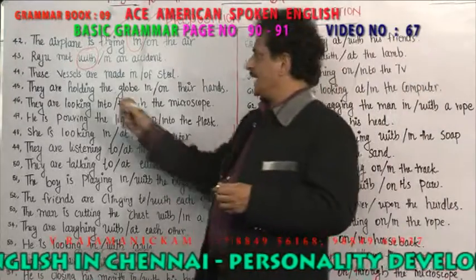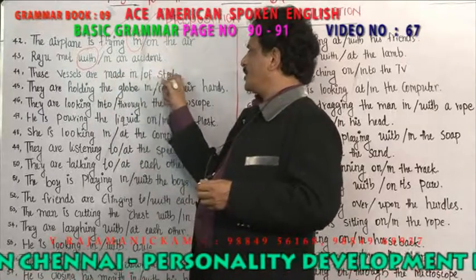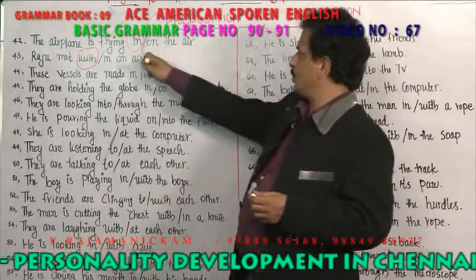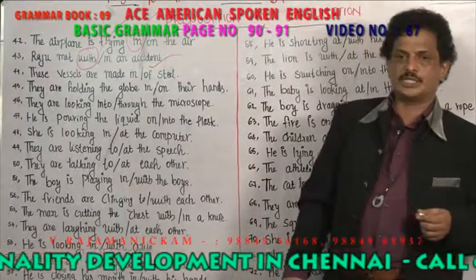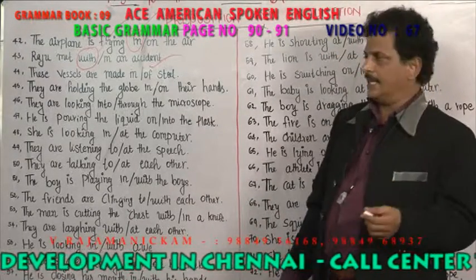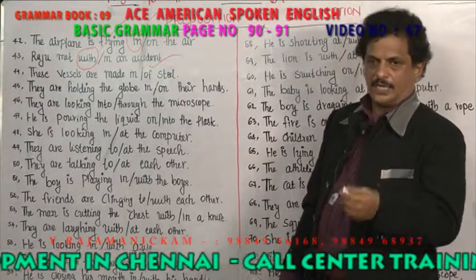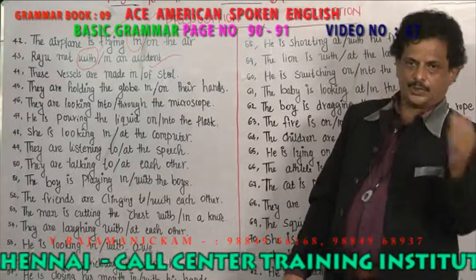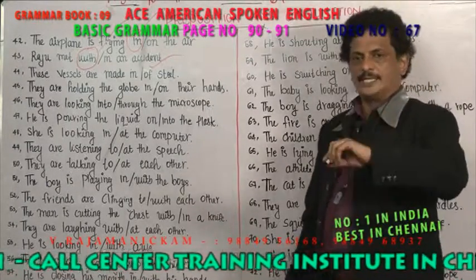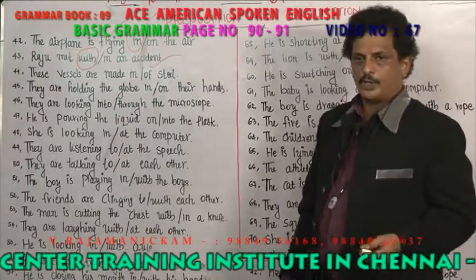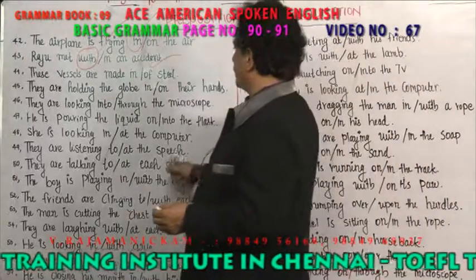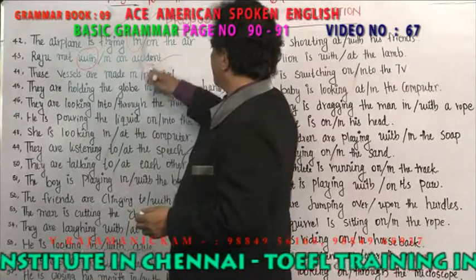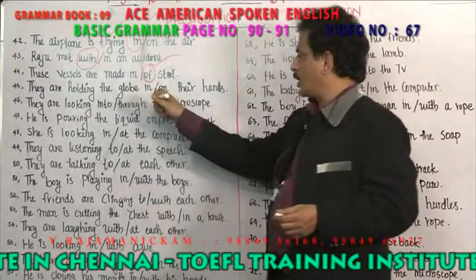These vessels are made of steel or in steel? 'Of steel' is used when something possesses something — the vessel is of steel. 'Of' is used when something possesses something. When a person possesses something, apostrophe is used; for materials you use 'of.' So 'of steel' is the correct answer.